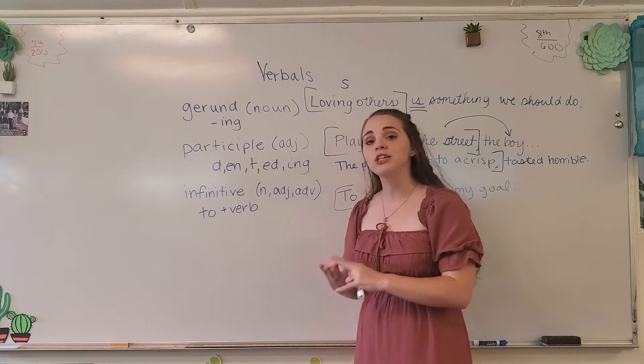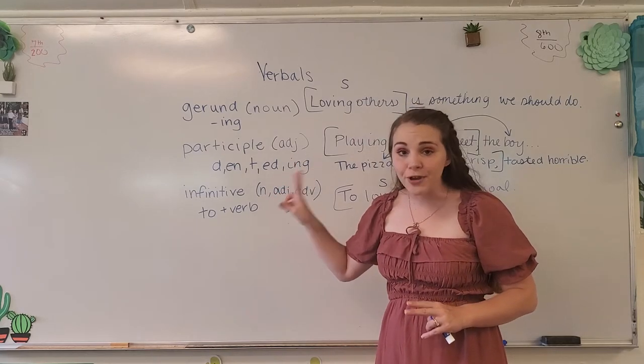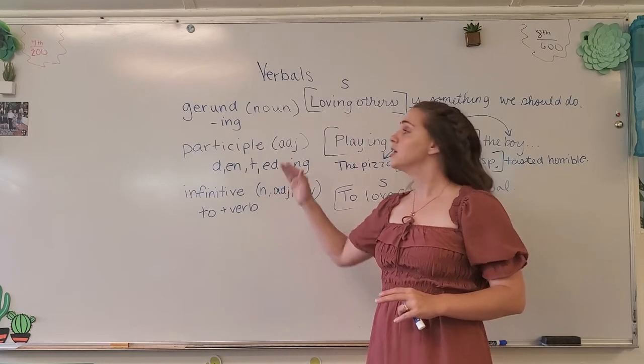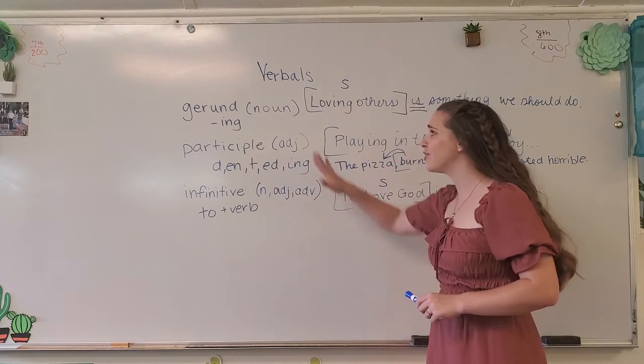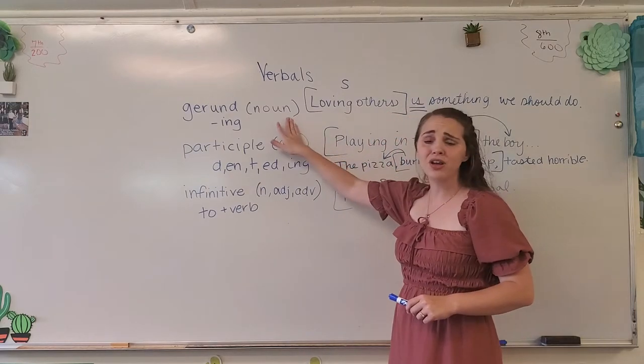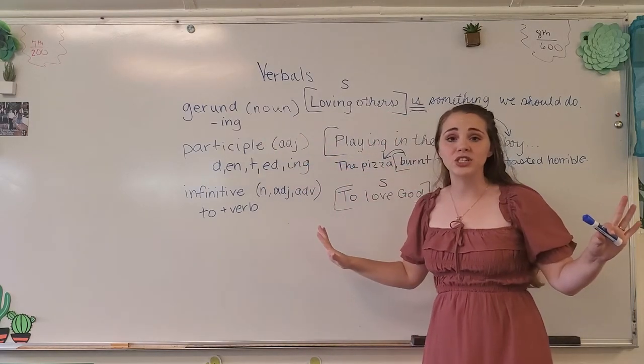There are three types of verbals. Two of them are very, very easy: gerunds and participles. A gerund is always a noun. A participle is always an adjective — it always describes a person, place, or thing.